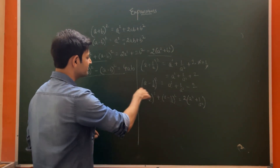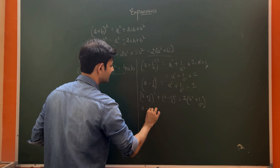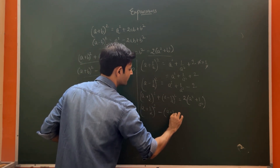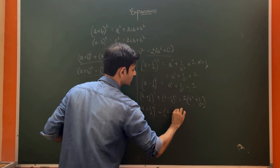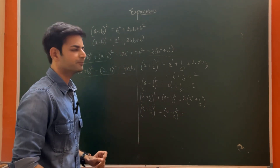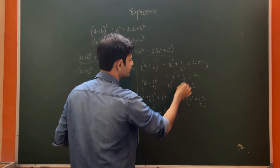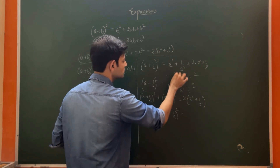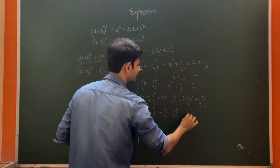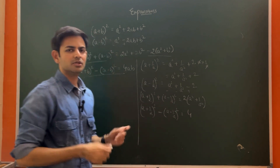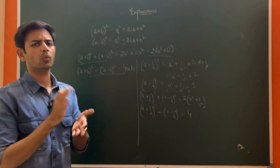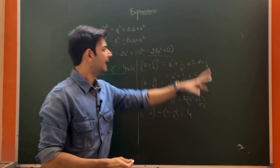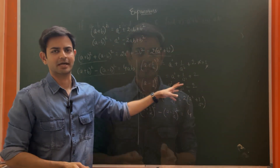If we subtract them — (a + 1/a)² minus (a - 1/a)² — the squared terms cancel and we get 4 as the answer. So depending on what is asked and what is given in the question, we can apply any of these eight formulas.